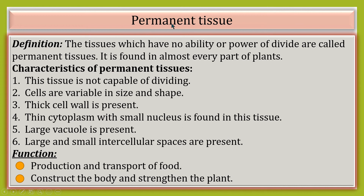Now, what do you mean by permanent tissue? The tissues which have no ability or power to divide are called permanent tissues. It is found in almost every part of plants. This tissue is not capable of dividing. Cells are variable in size and shape. A thick cell wall is present. Thick cytoplasm with a small nucleus is found in this tissue, and large vacuoles and intercellular spaces are present.